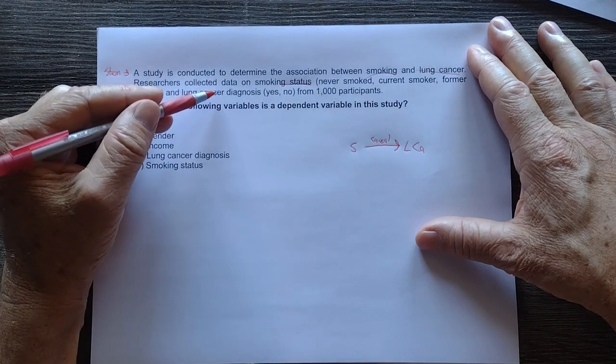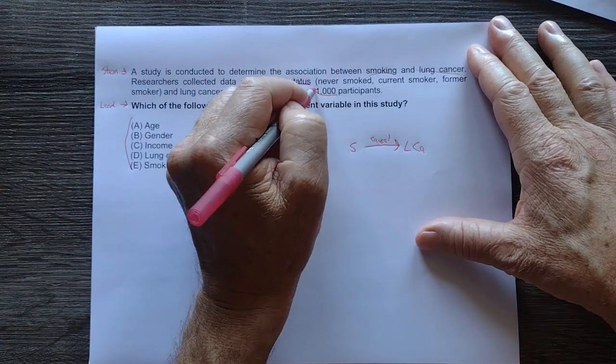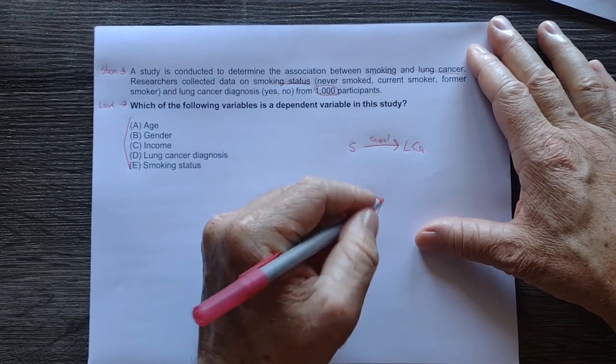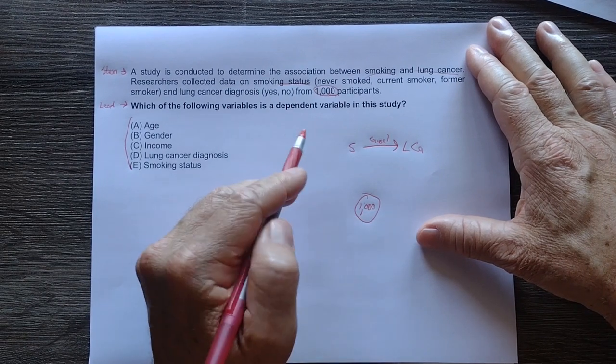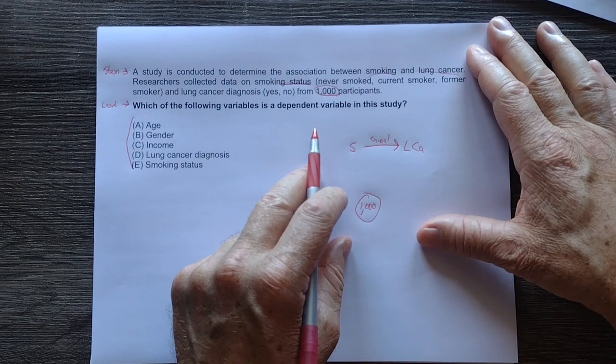They had a lung cancer diagnosis of yes or no, which is also categorical data. They had a thousand participants. We followed them over time, it looks like. No, we didn't follow them over time. They just collected data on whether they smoked or didn't smoke, and whether they had a yes-no lung cancer diagnosis.